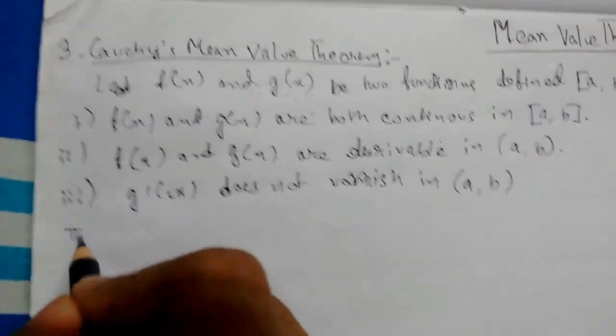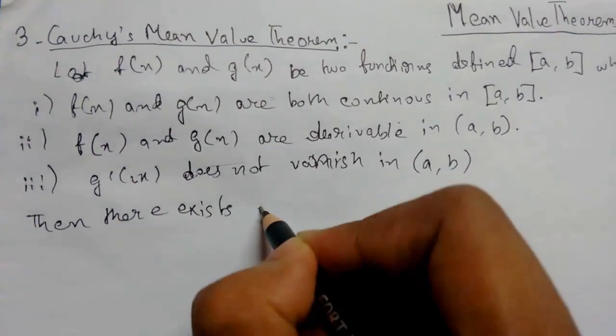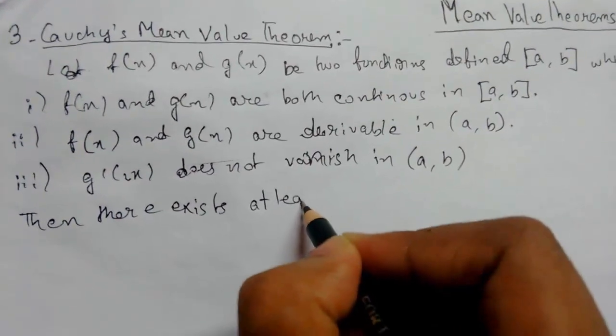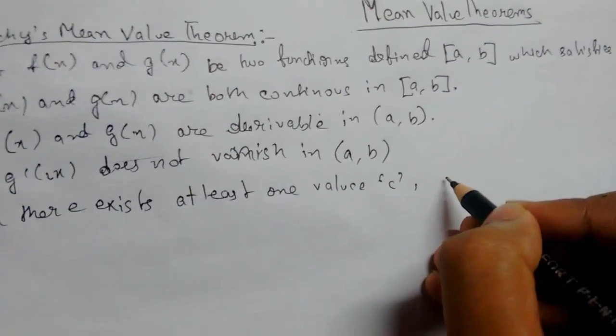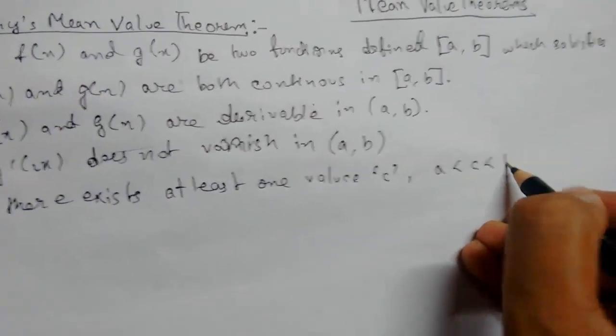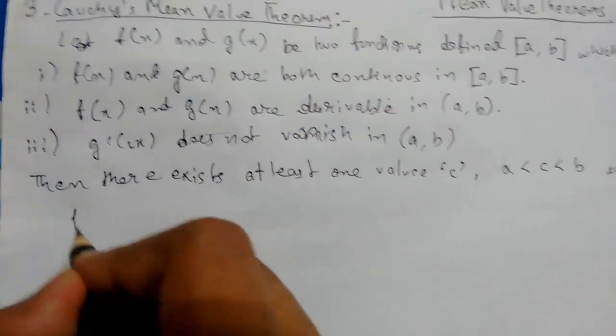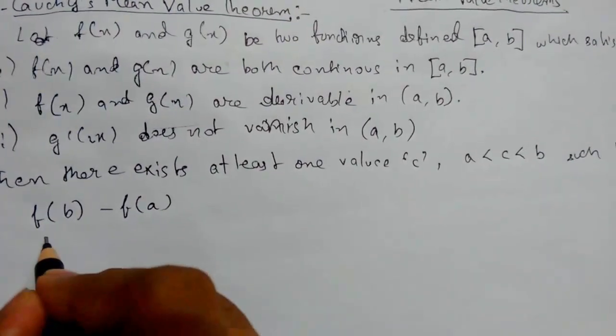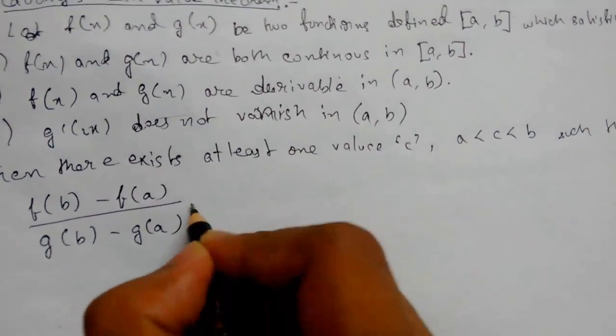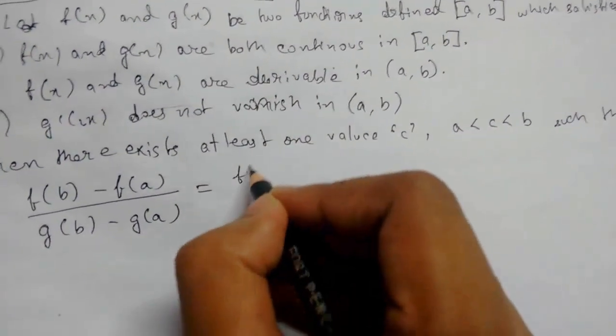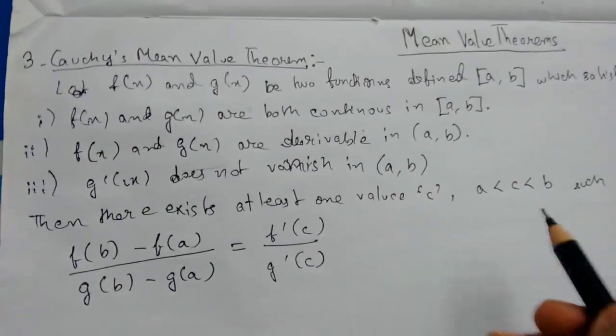Such that f(b) minus f(a) upon g(b) minus g(a) will be equals to f'(c) upon g'(c). So this is our Cauchy's mean value theorem.